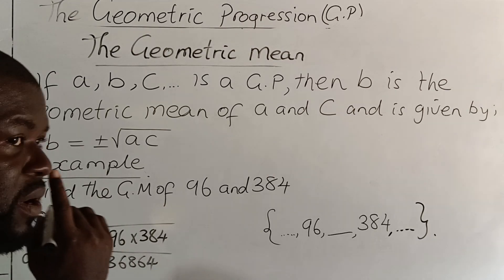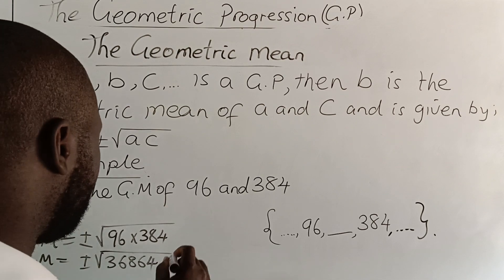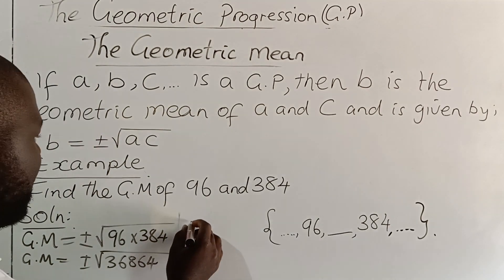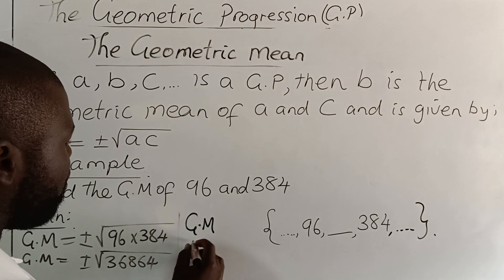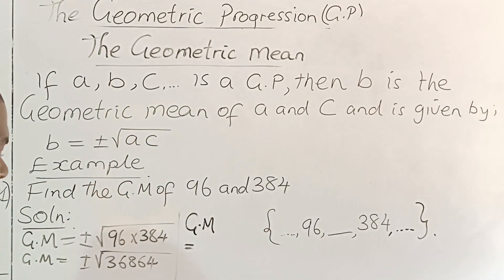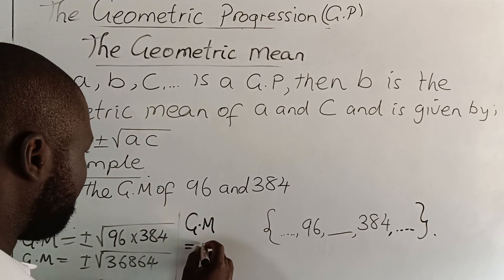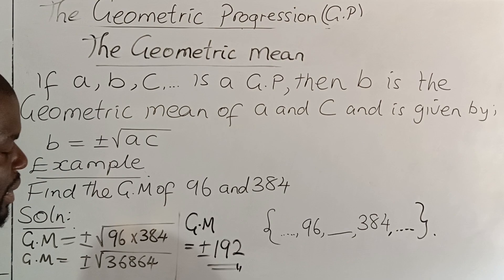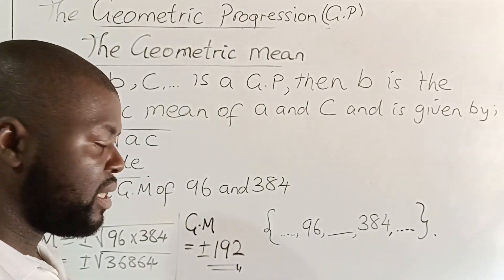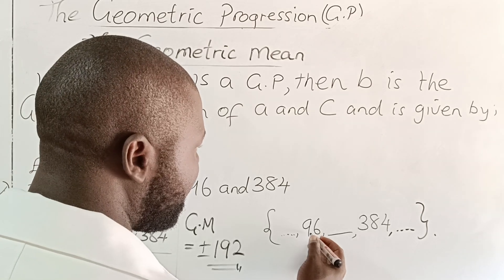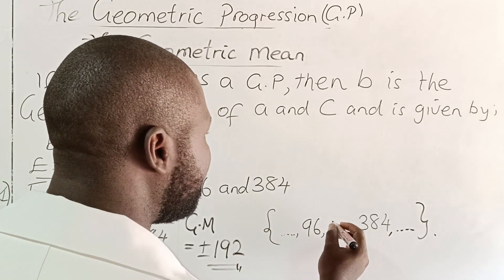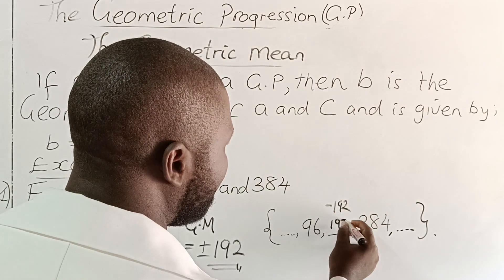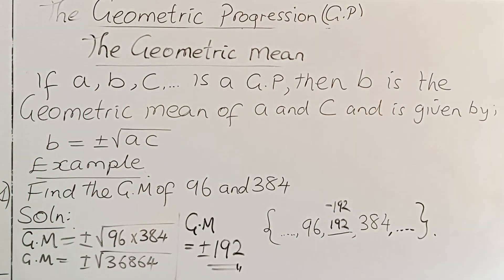...864. And when we get 36,864 and we get the square root, we are going to see that the geometric mean of 96 and 384 is ±192. So meaning that in our GP, the number that should be between 96 and 384 is either -192 or +192. So basically this is how we get the geometric mean.